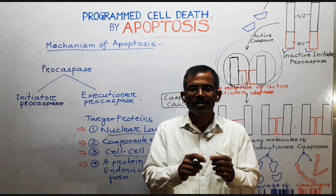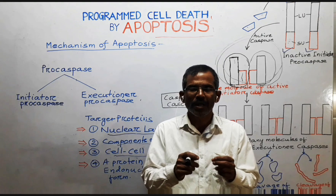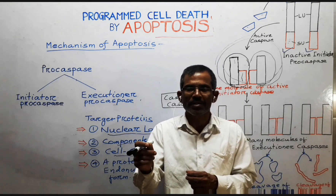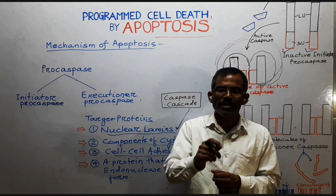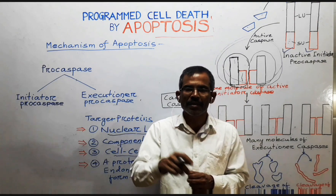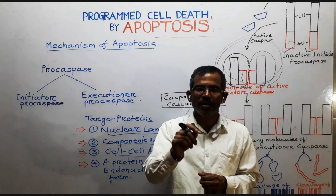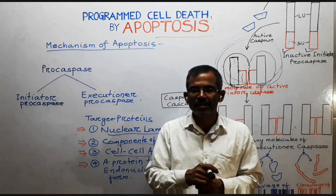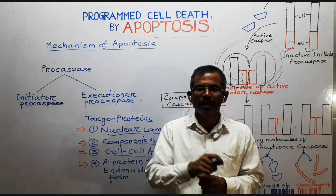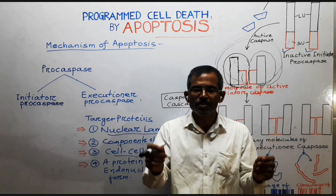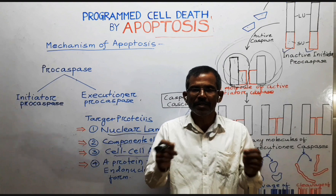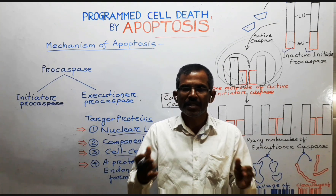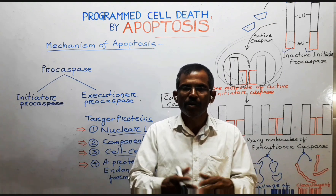All it requires is a trigger to get activated. The question is how the caspase cascade is initiated and how the first initiator Procaspase is activated. Initiator Procaspases have a long Pro domain containing a caspase recruitment domain that enables them to assemble with adapter proteins to form an activation complex. Once incorporated into such a complex, the initiator Procaspases are brought into close proximity, which is sufficient to activate them.